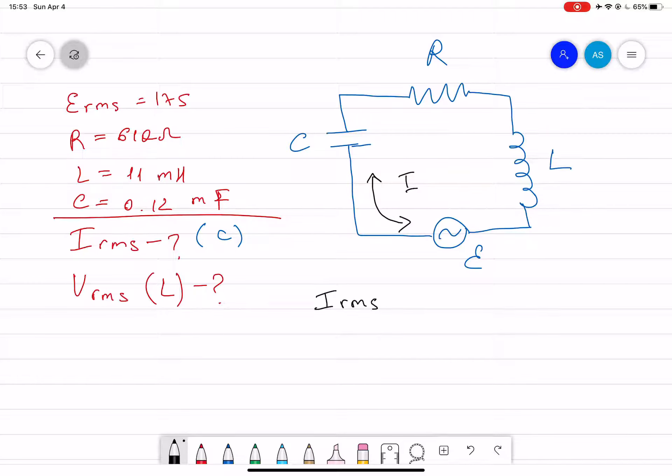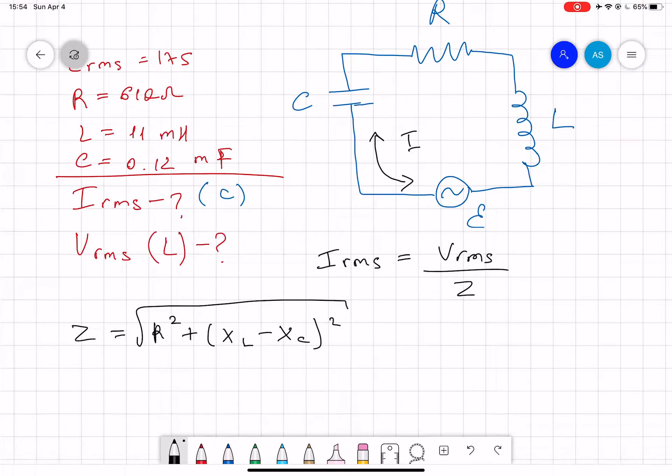I_rms is equal to V_rms divided by Z. Z is equal to the square root of R squared plus (X_L minus X_C) squared.